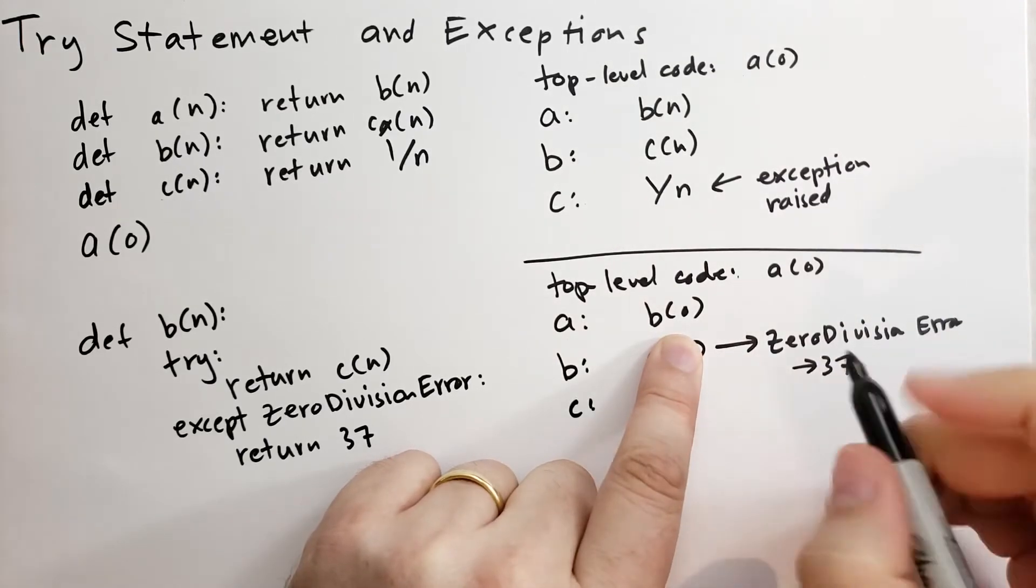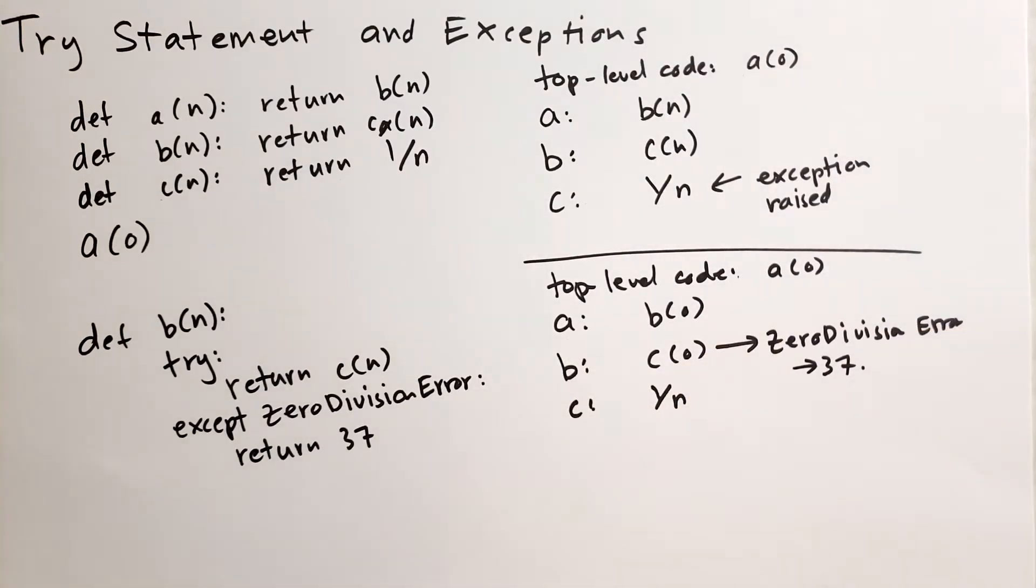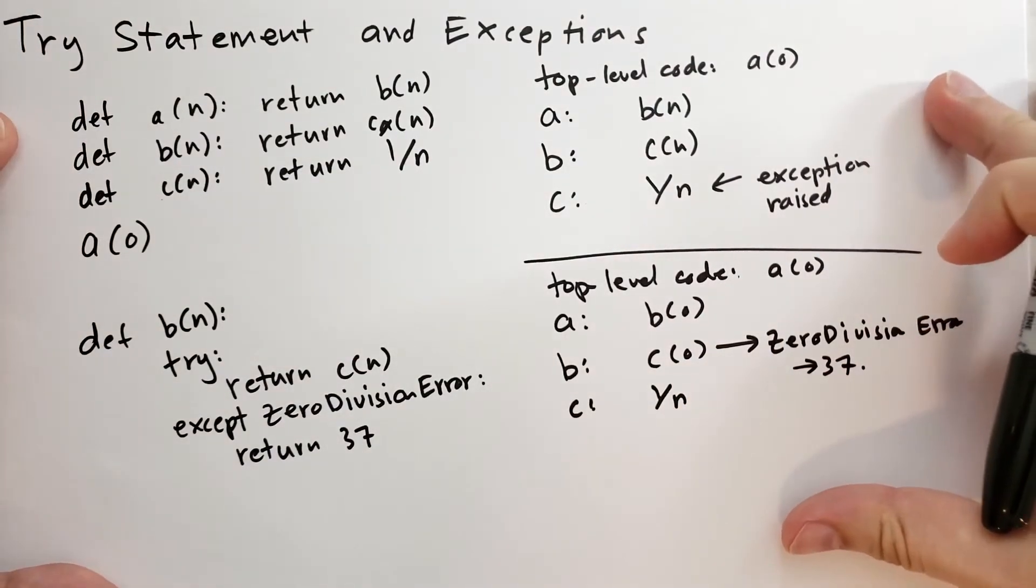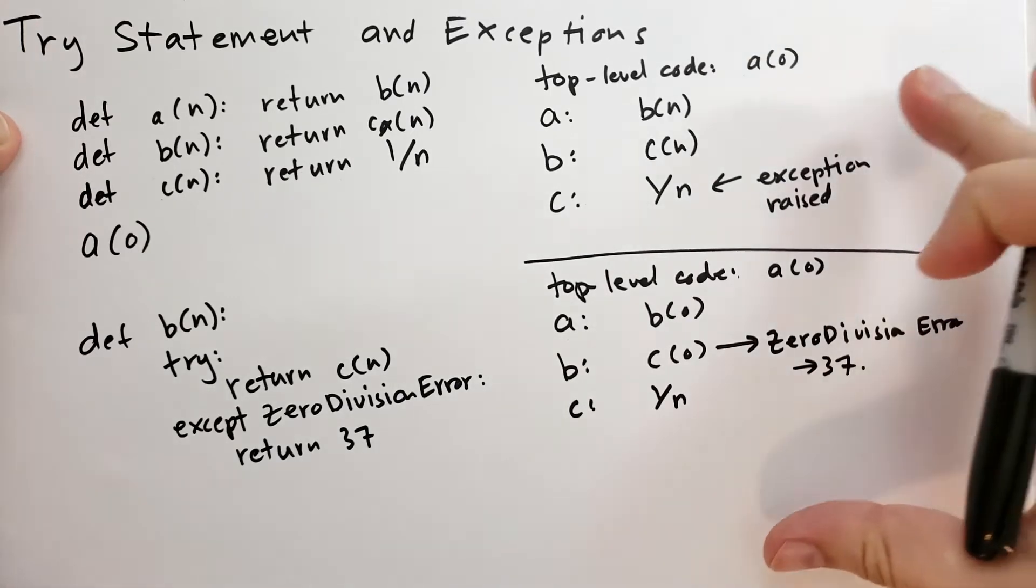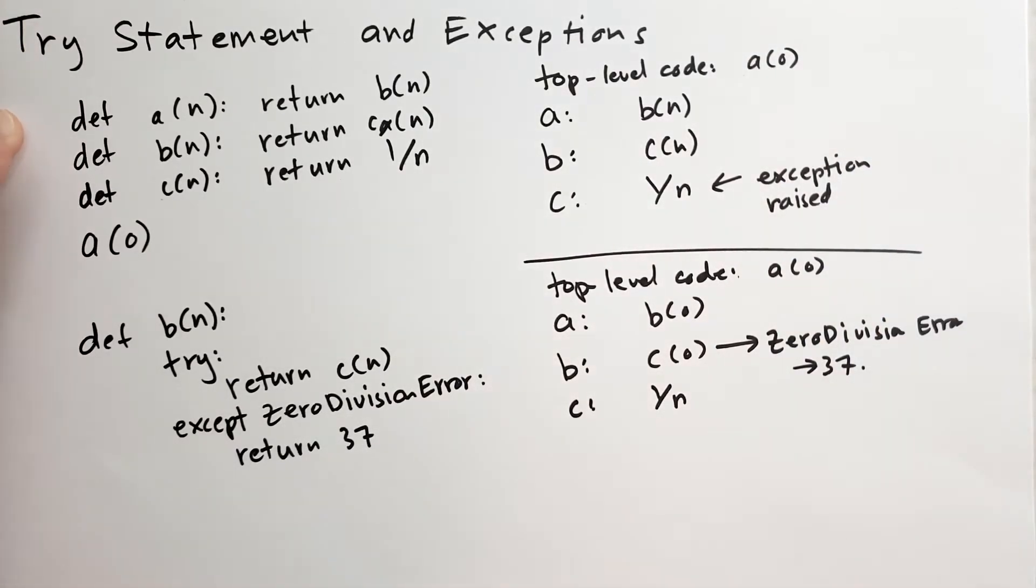So the result of b is 37, and so a of 0 is going to return 37. Hopefully this illustrates how exceptions work and what's going on with exceptions. If you have any questions or if this is confusing at all, please let me know in the comments below, or join me on Discord.